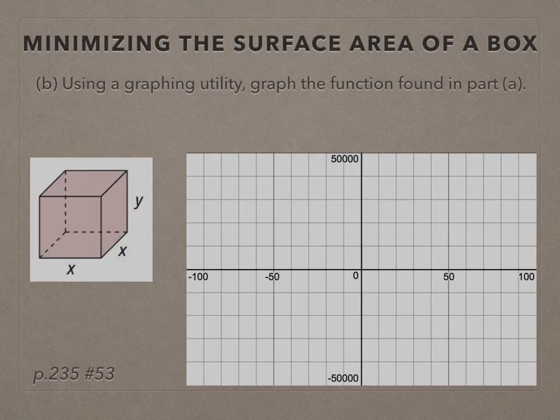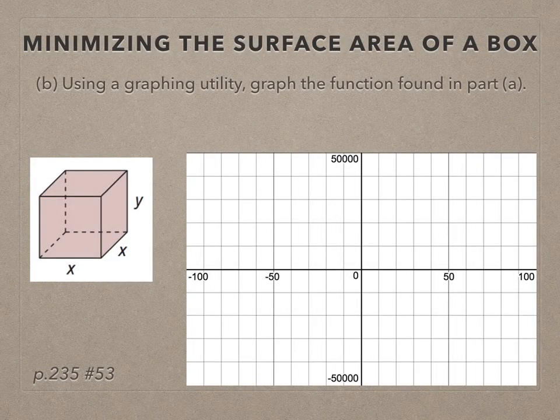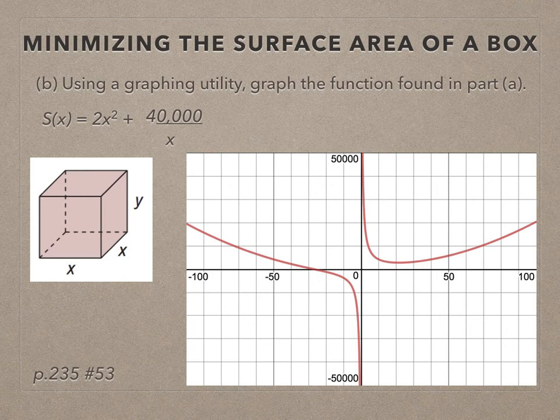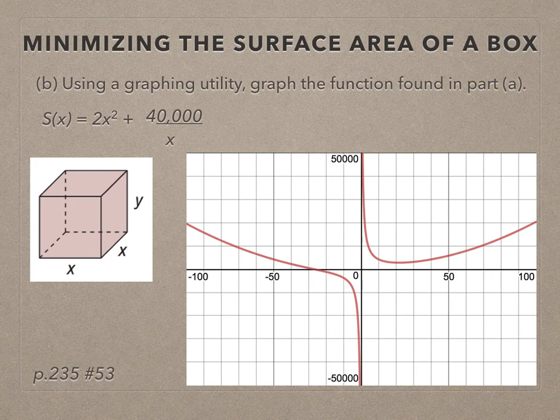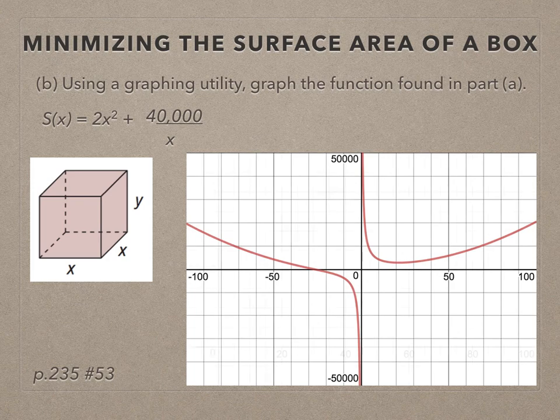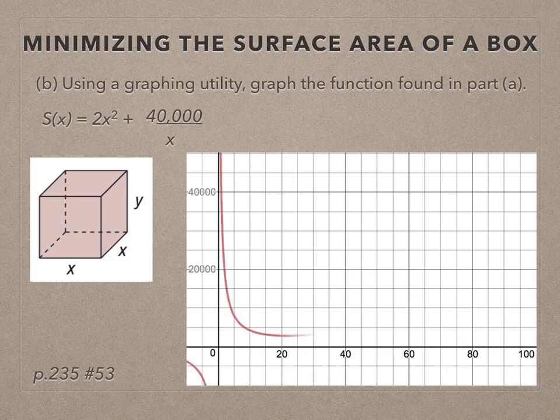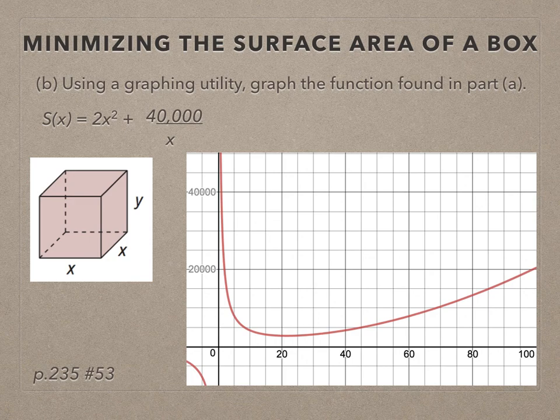Part b is to graph this function that we just found in part a. I'll graph that using an online graphing utility like Desmos. But now I'm thinking about the context of the problem. x stands for the side length. So we can't really have negative side length in this context. So let's take a look again, but focusing more on quadrant one. Here is the function. So we've graphed the function.